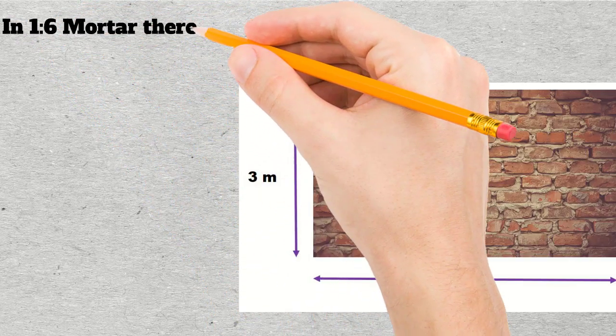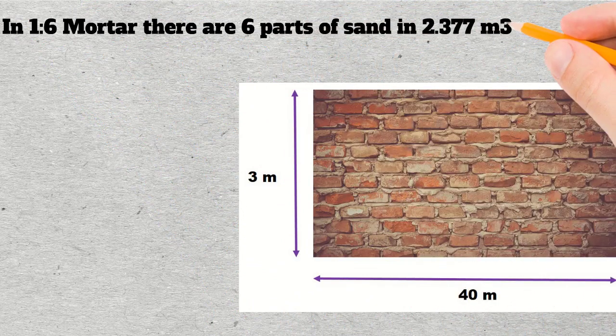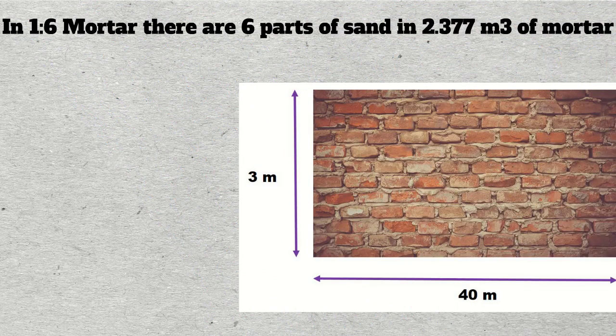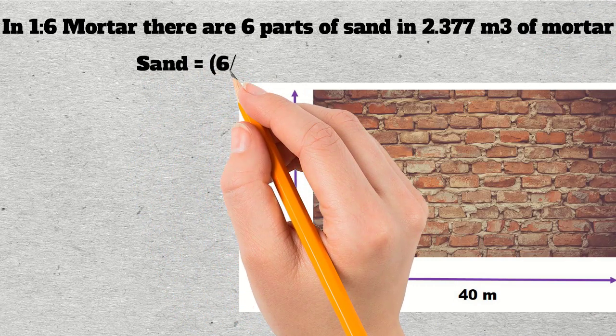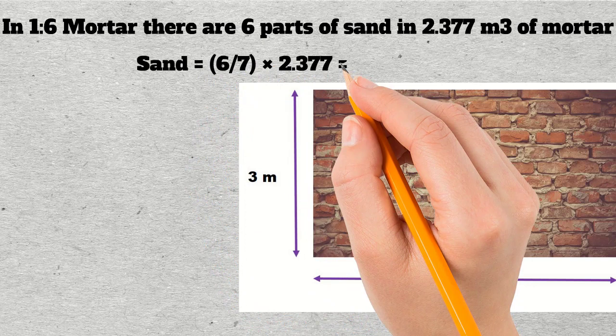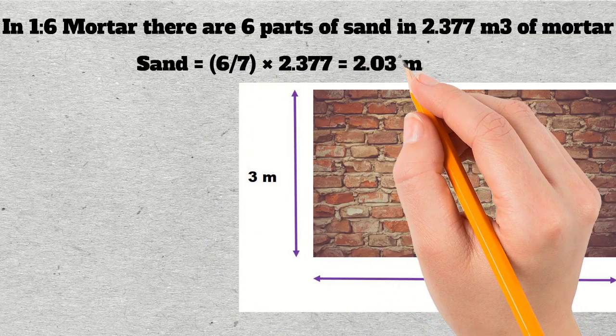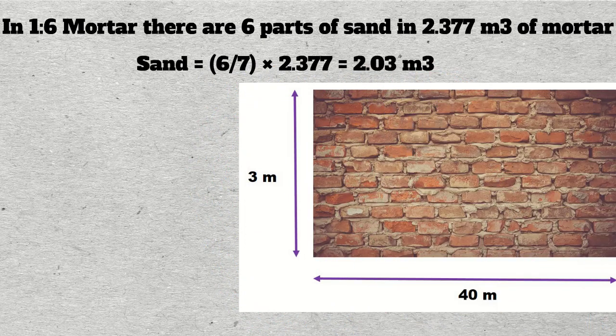There are 6 parts of sand quantity in 2.377 cubic meters of mortar. To find its quantity, sand will be equal to 6 parts divided by the sum of ratio, which is 7, multiplied by the quantity of mortar, 2.377. By calculation, we need 2.03 cubic meters of sand.